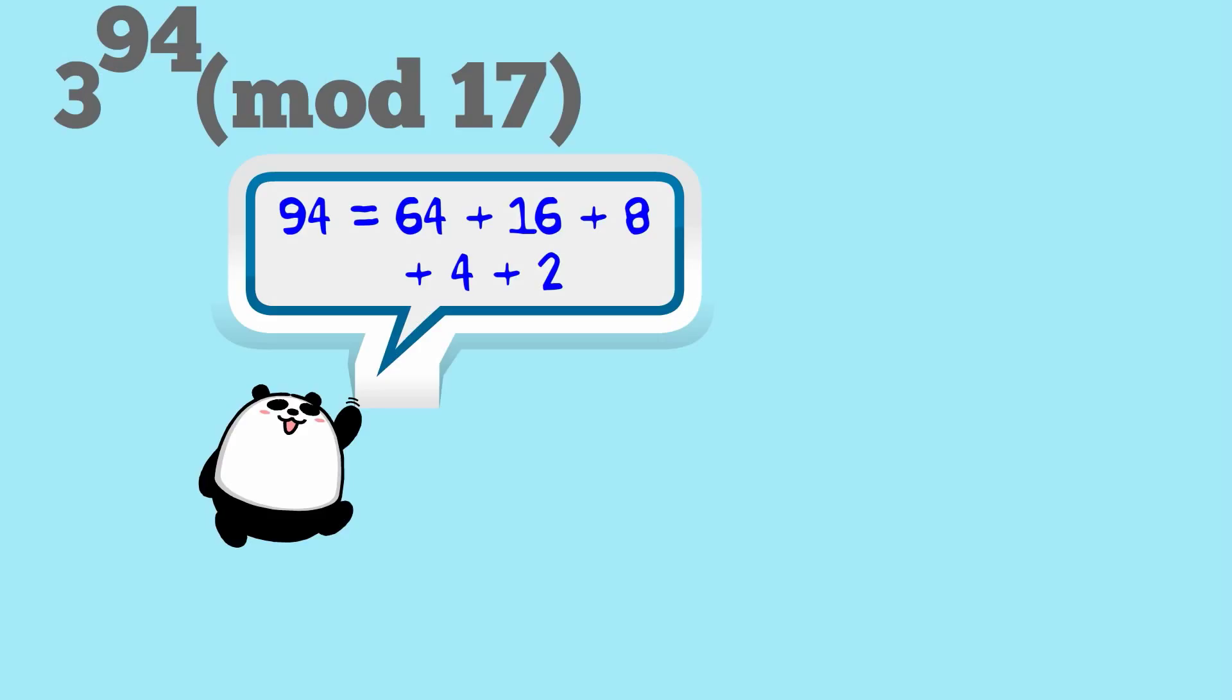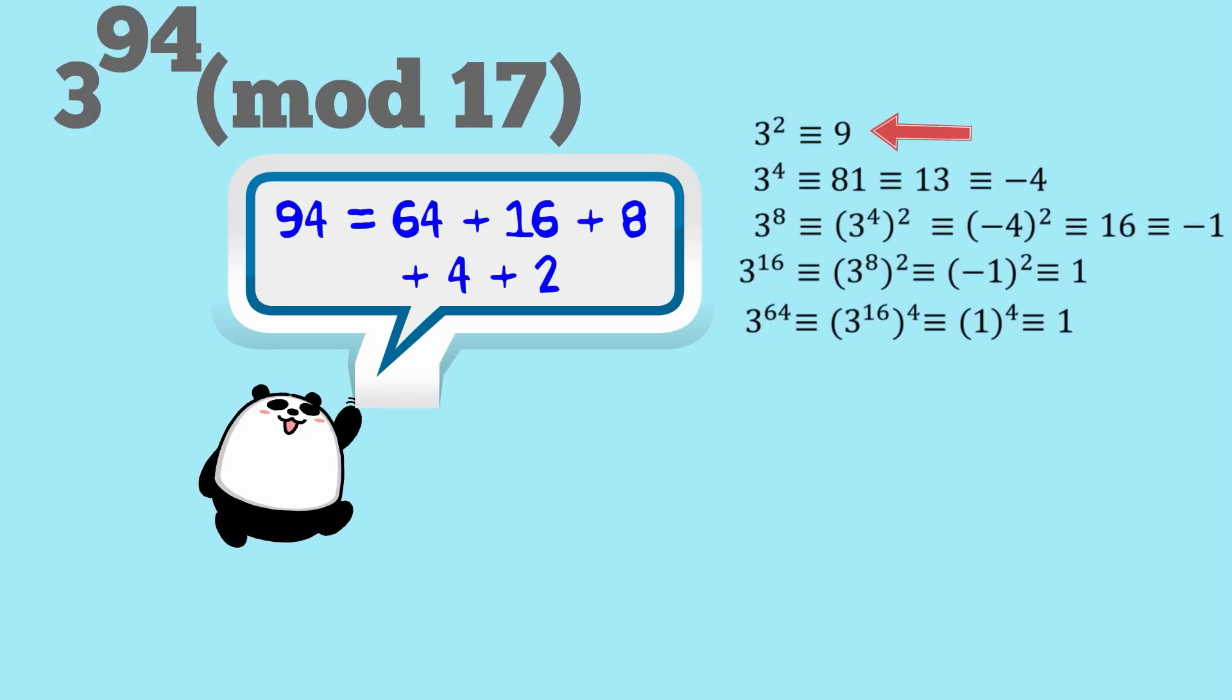So here we have 94 is equal to 64 plus 16 plus 8 plus 4 plus 2. So we're going to work out 3 to all these powers modulo 17. So we start off with 3 squared is equivalent to 9. That's easy.